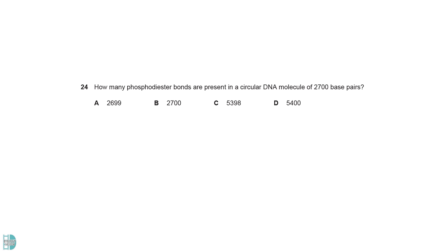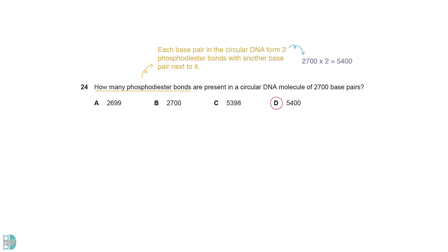Each base pair in the circular DNA should form 2 phosphodiester bonds with another base pair next to it. So the total is 2700 times 2.